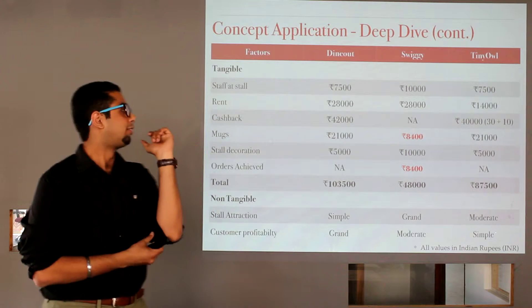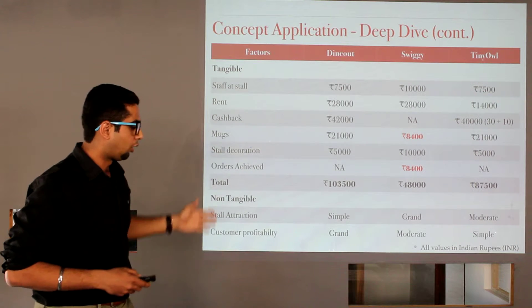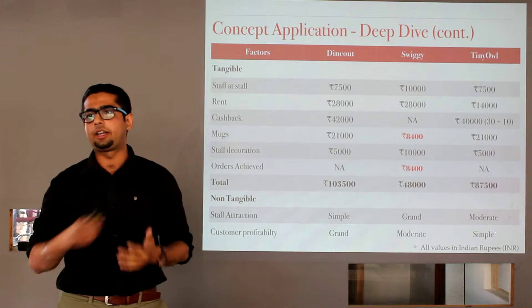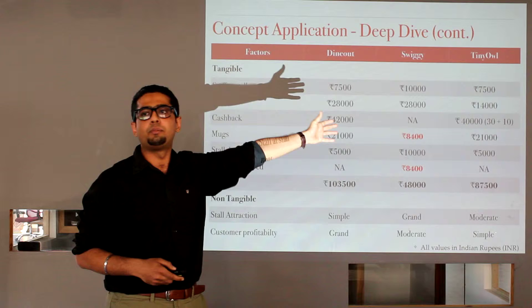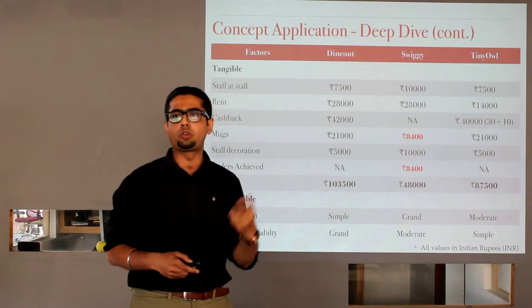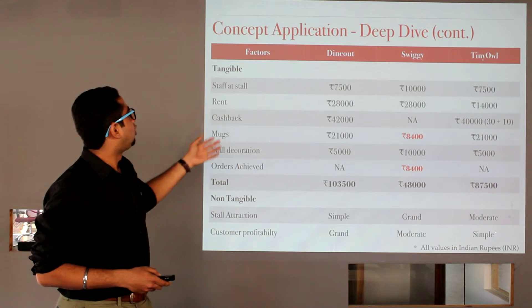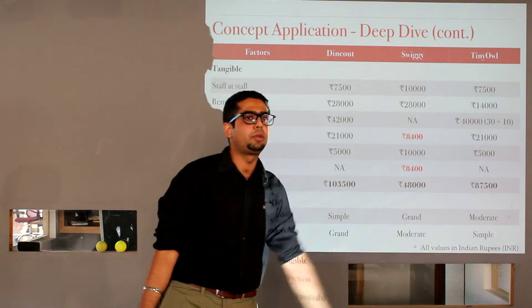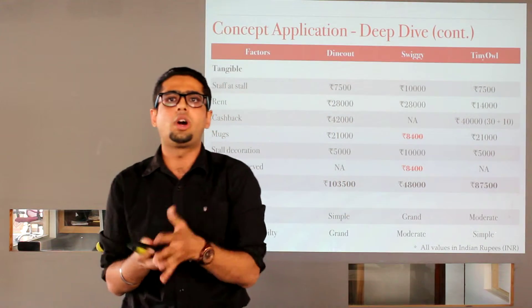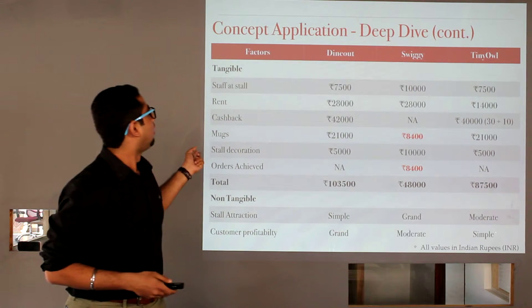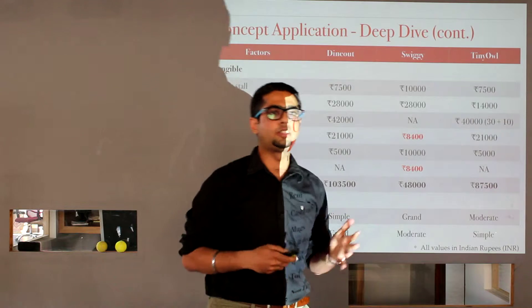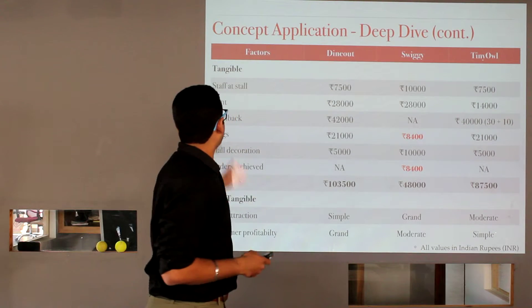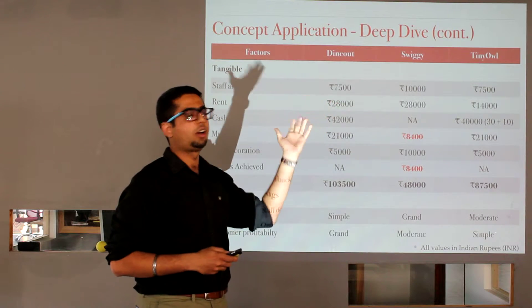We have seen these metrics earlier. Staff per stall, rent, cashback. Now, these are the various values. These are the various investments, I would say, that these brands put in in order to sustain this marketing campaign. For staff at stall, the highest cost was Swiggy since they had more number of people employed at their stalls. For rent, it was DineOut and Swiggy who worked for two days. So they paid the equal and higher rent. The cashback was most for DineOut, almost equal for TinyOwl and none for Swiggy since they did not have cashback in the model. TinyOwl is mentioned 30 plus 10 because the moment you reach that stall, they are immediately giving you a 100% cashback coupon. So that has been factored into it. The mugs. The cost of mugs over here has been approximated on the basis of research done on wholesale operations. What sort of cost would they incur on each coffee mug if they ordered a bulk order? So that was 21,000, 8,400 and 21,000. So DineOut and TinyOwl are more or less tied in this.